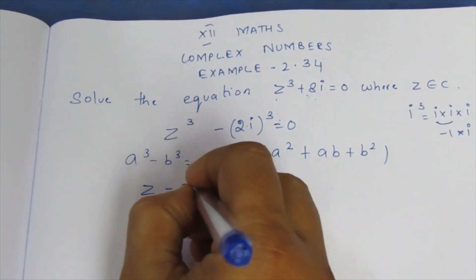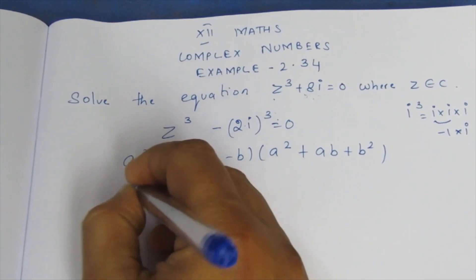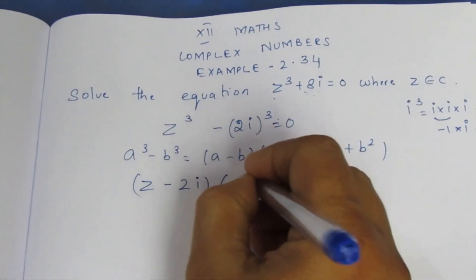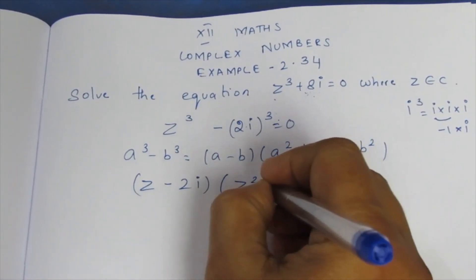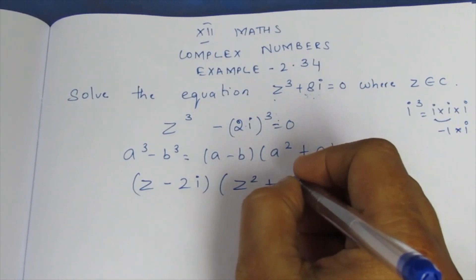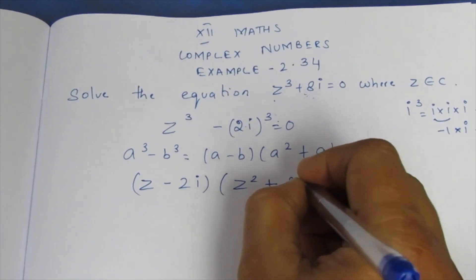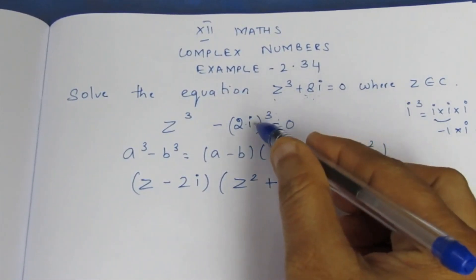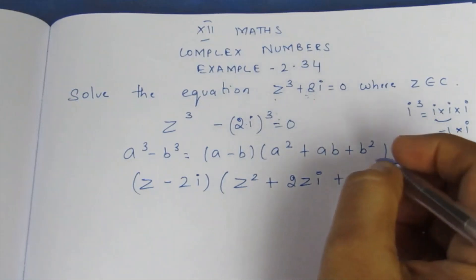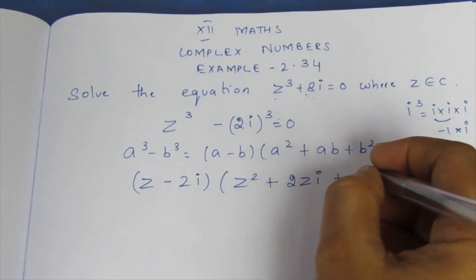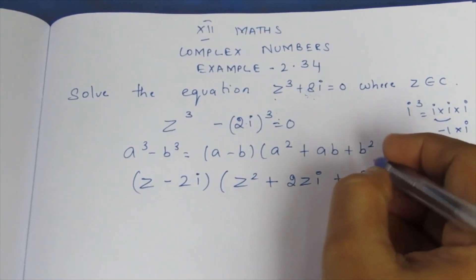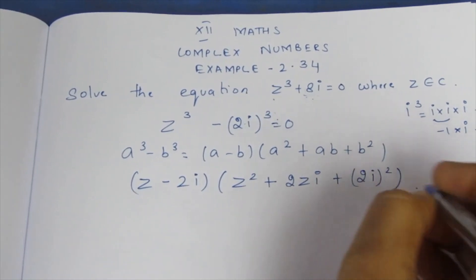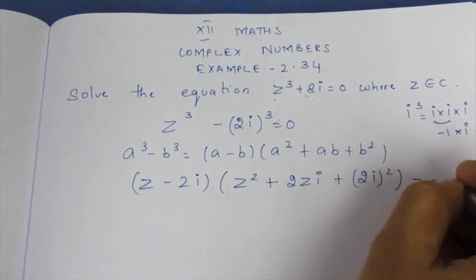Using the (A - B) factor formula: (Z - 2i)(Z² + Z·2i + (2i)²) = 0, which gives (Z - 2i)(Z² + 2Zi + (2i)²) = 0.